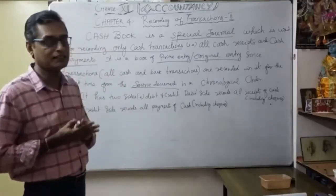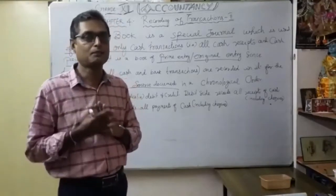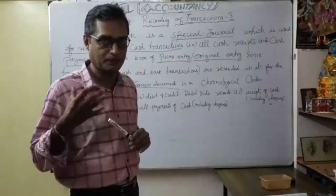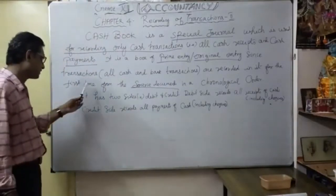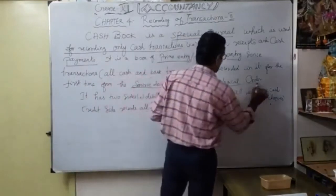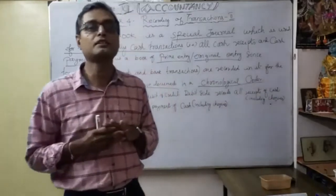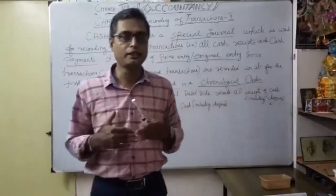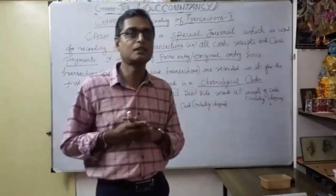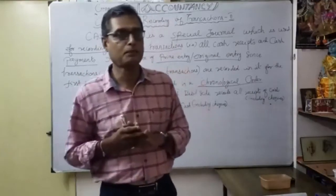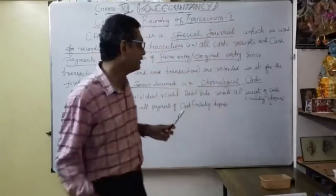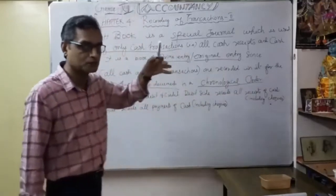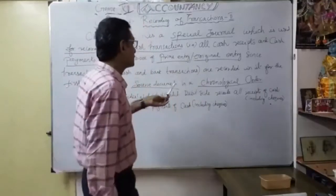Cash is always a favorable balance — it never becomes a negative balance. So cash in hand: at the end of the month, what cash is in our hand? Always you want to record the cash transactions in chronological order — that means date-wise. So whatever happens today, you have to record on that particular date only. You can't write before the day — you always have to record in chronological order, which simply means date-wise.